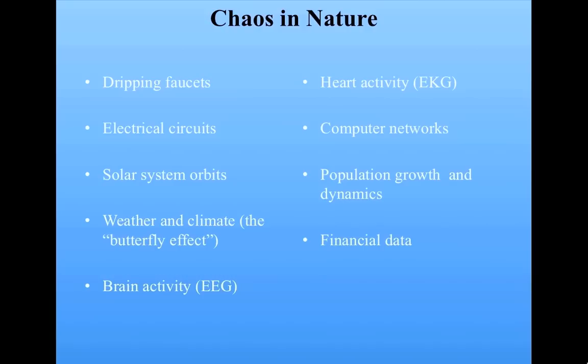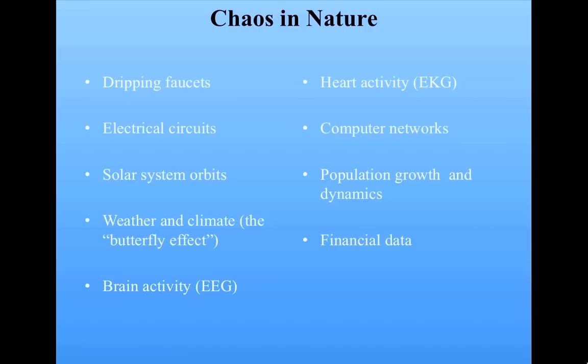Chaos is a very important area in dynamical systems theory and shows up in many different contexts — brain activity, population growth, financial data, and so on. We're going to look at the phenomenon of chaos in population growth, in a very simple model. We're going to address the question of what is the difference between chaos and randomness, which turns out to be a more subtle question than one might think, and we're going to explore it through the notion of what's called deterministic chaos.